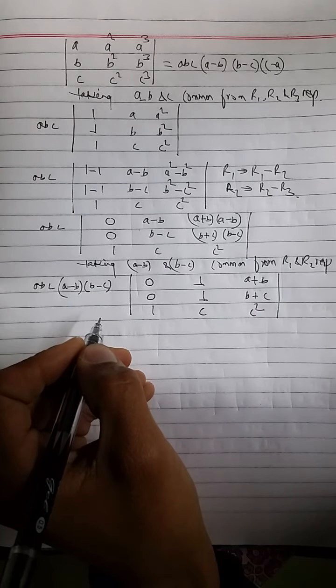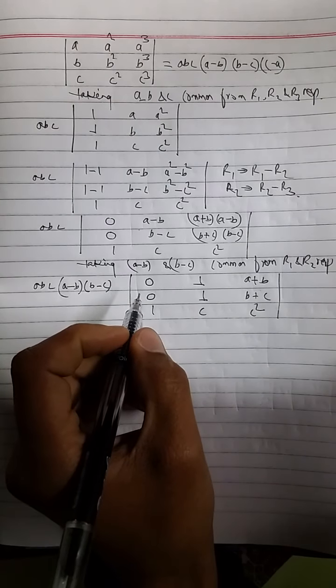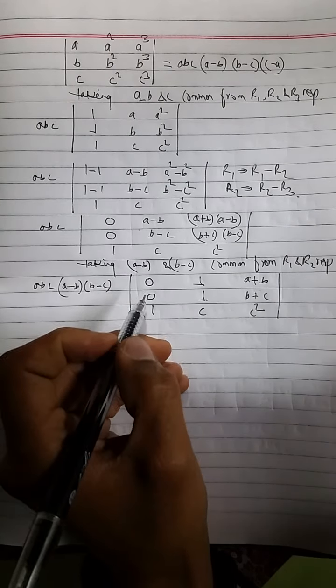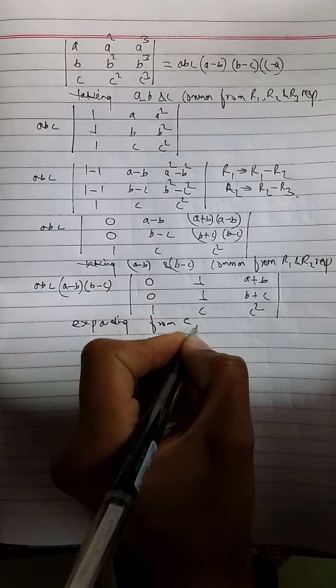Now, we are just about to expand. And be pretty sure that from that particular row or column should be expanded which consists 0 for simplicity. So I am expanding from column 1.